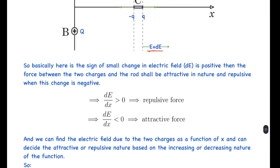So if dE/dx is greater than zero, it will be a repulsive force, and if dE/dx is less than zero, it will be an attractive force. We can find the electric field due to the two charges as a function of x, and we can decide the attractive or repulsive nature based on the increasing or decreasing nature of the function of electric field as a function of x.